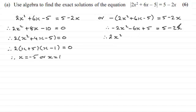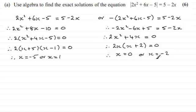If I rearrange by adding 2x squared to both sides we get 2x squared, then plus 6x minus 2x which is 4x. The 5s cancel, so this equals 0. Pull out 2x as a common factor: 2x times x plus 2 equals 0. Therefore x equals 0 or x equals minus 2. So there's our answers.